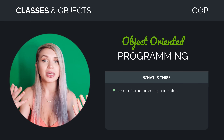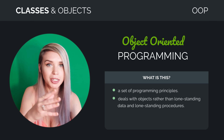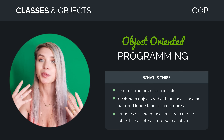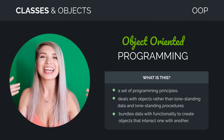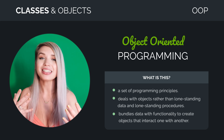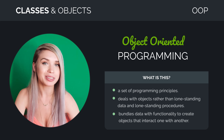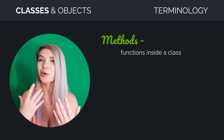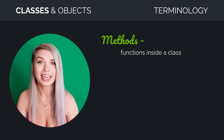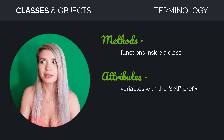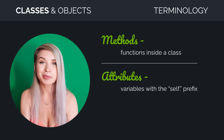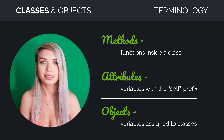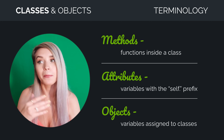So instead of simply working with data and calling lone standing functions on that data, we bundle the data with the functionality and we work with objects instead. Now that we've learned about classes, I can finally start using more technical terms inside our GUI projects. From now on, the functions within the scope of our class will be called methods, and the variable names with the prefix of self will be called attributes. And whenever we assign a variable name to a class instance, we will no longer call it a variable, but an object.